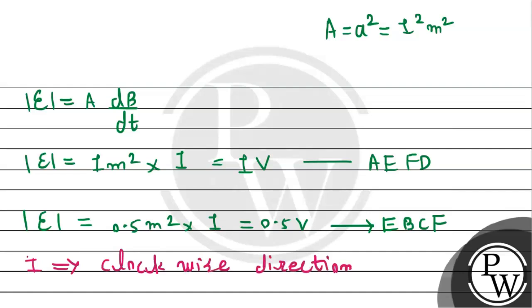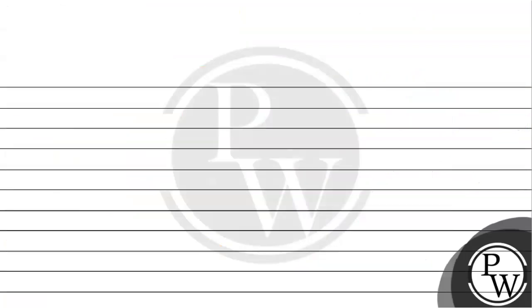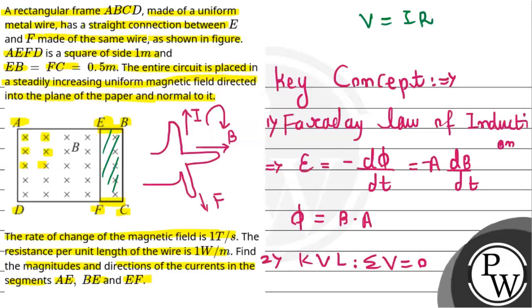By Fleming's rule, the current direction is in clockwise direction. Since the current is clockwise, and the wire's resistance per unit length is 1 ohm per meter, using this data, the image can be obtained. Since the rectangular frame is made of uniform metal wire, that wire has resistance. Basically, it will work like a circuit.